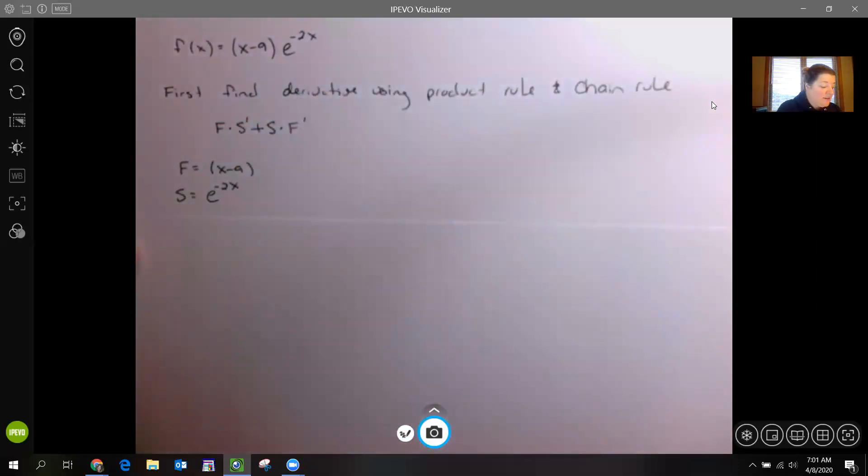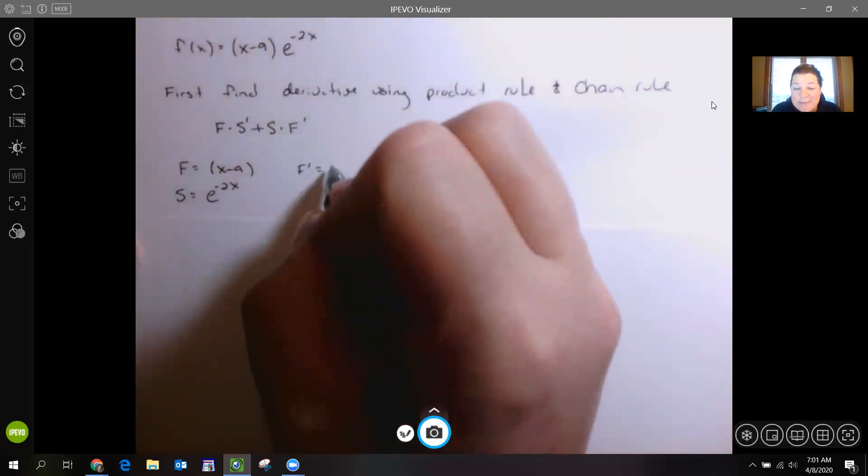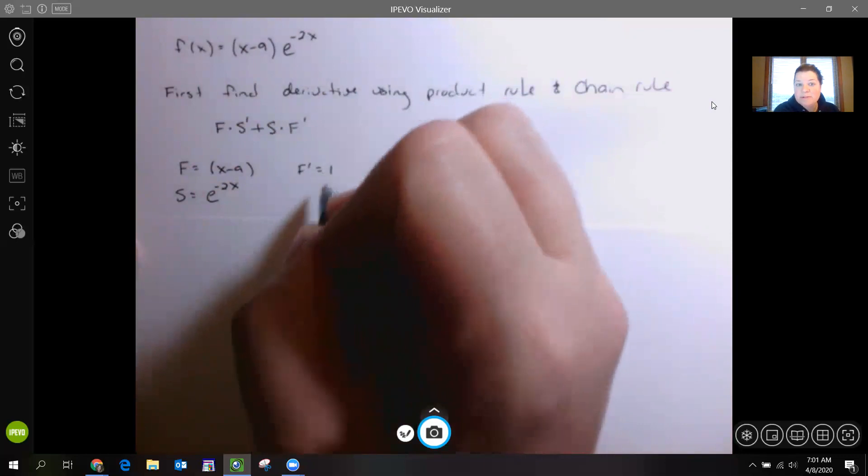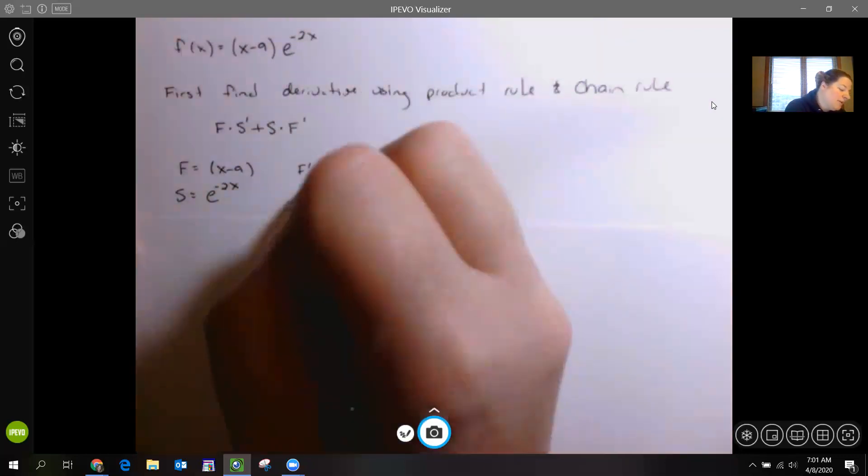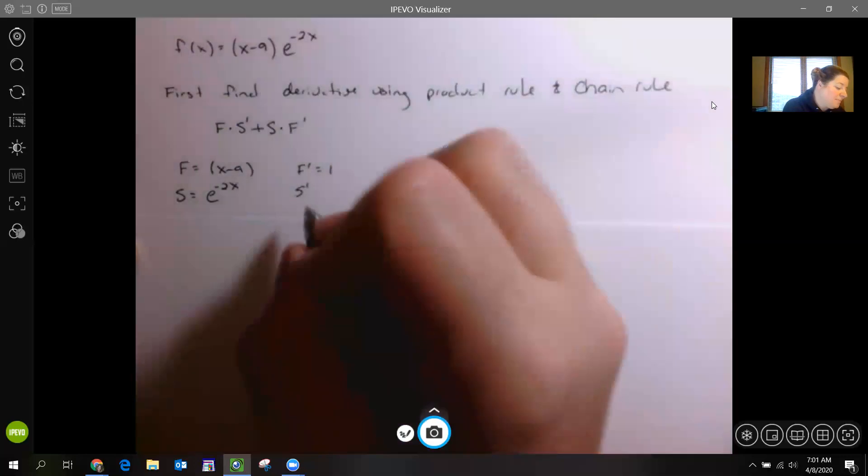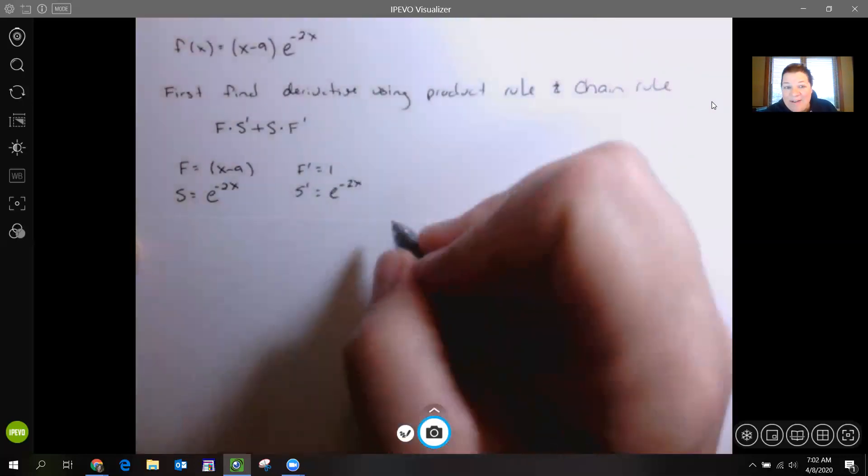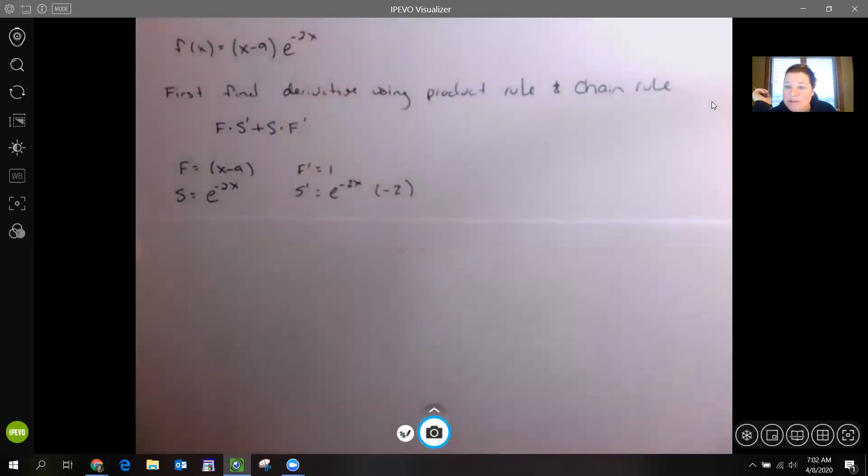We want to find the derivative of each of these. The derivative of X minus 9 is just 1, so the 9 drops off, left with just a 1. Now the derivative of the second, we know e to the X stays e to the X, but we have a negative 2 up there. So we keep what we have and we have to multiply it by the derivative of the exponent, and that was our chain rule.